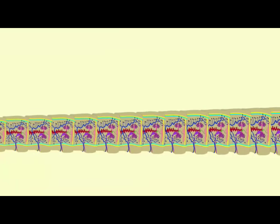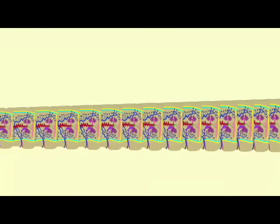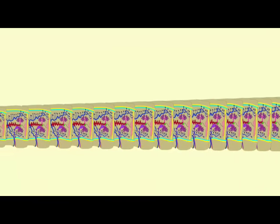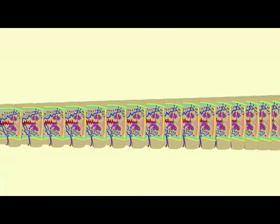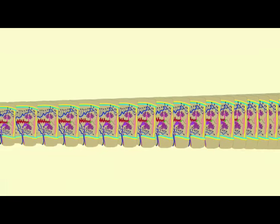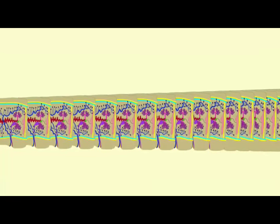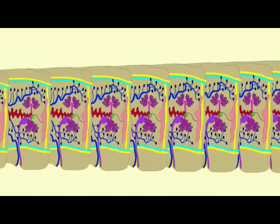They produce eggs, and after fertilization, embryos. As the proglottids mature, they can be released from the tip of the tapeworm and pass through the host feces.